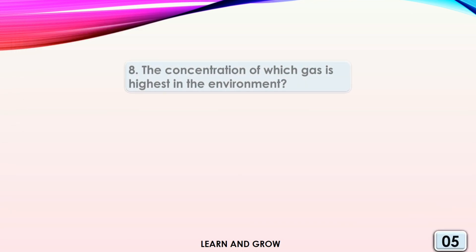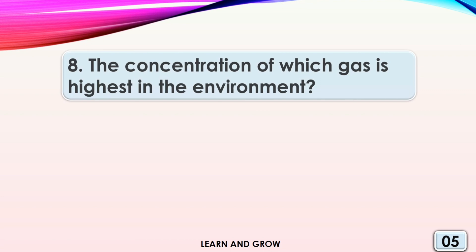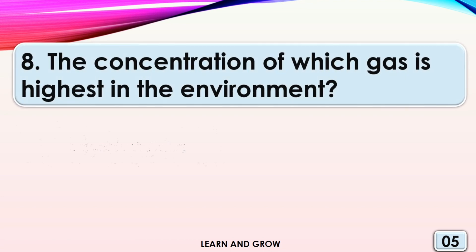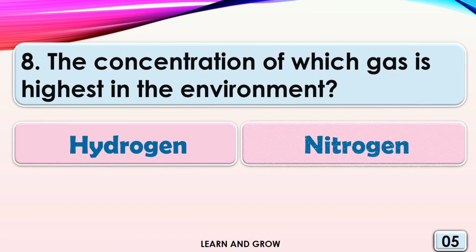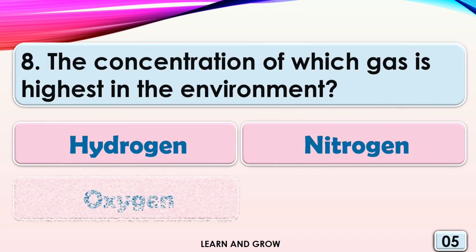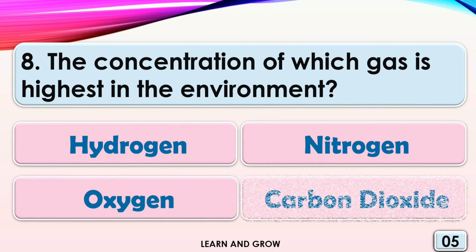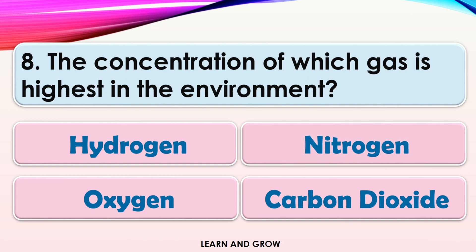The concentration of which gas is highest in the environment? Options are: A, Hydrogen; B, Nitrogen; C, Oxygen; or D, Carbon dioxide. The answer is Nitrogen.